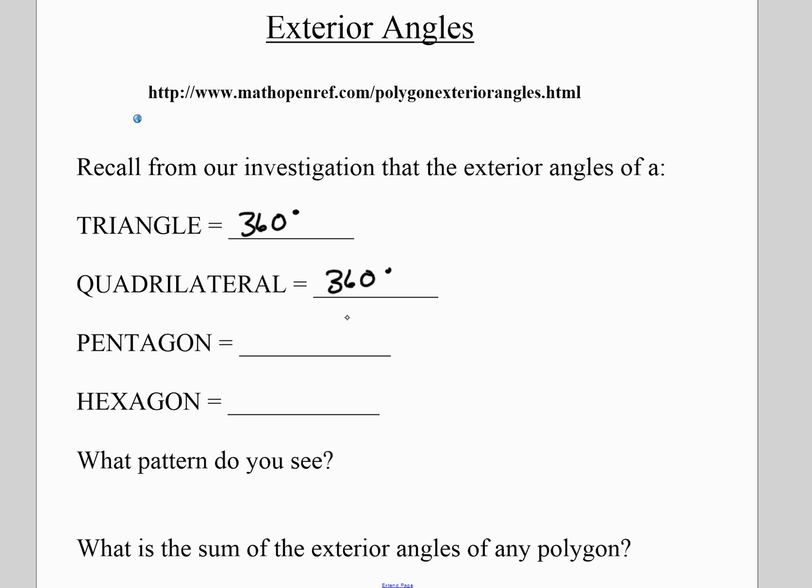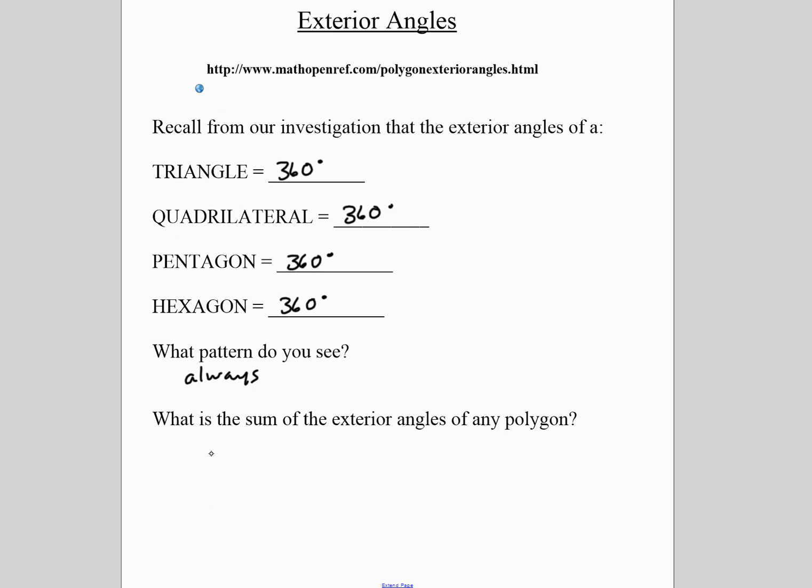It doesn't matter how many sides the polygon has. The exterior angles always add to 360 degrees. Any polygon, the sum will be 360 degrees.